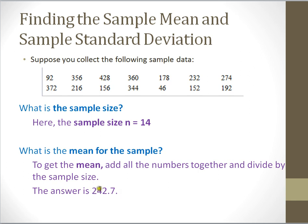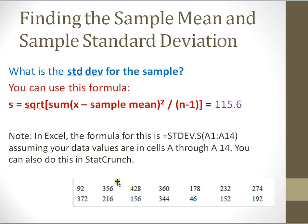So from every single value, we're going to subtract the sample mean. Then we're going to take that difference, and we're going to square it. After we square the difference, we're going to add them all together. That's what the sum means. Finally, after adding them all together, we're going to divide them by n minus 1, and then take the square root. When we do each of these steps, we get a sample standard deviation of 115.6.